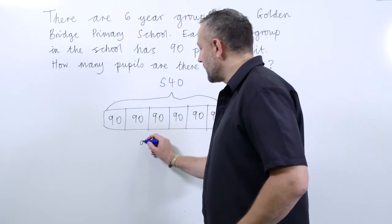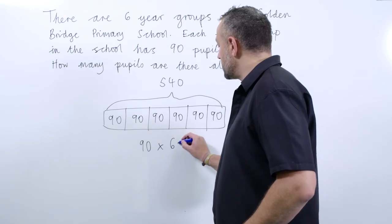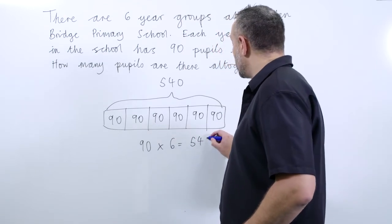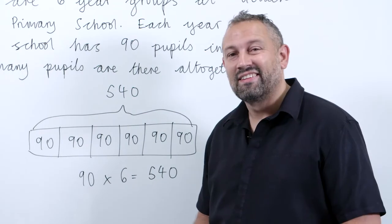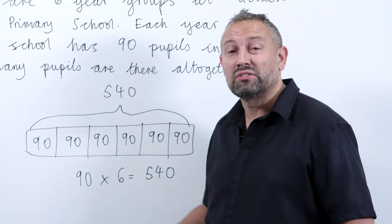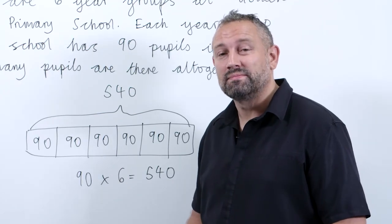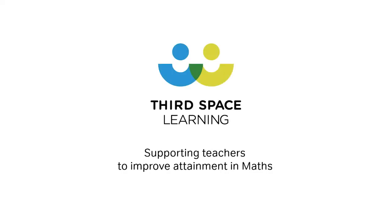And we will write this out. So 90 times six equals 540. And that's how we can use the bar method to solve a simple multiplication word problem.